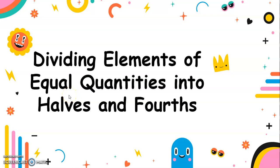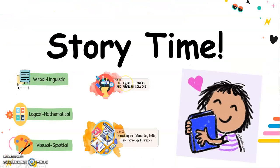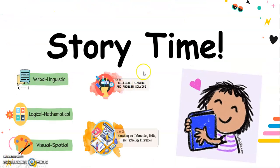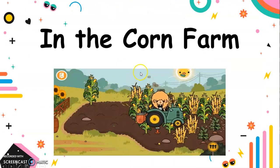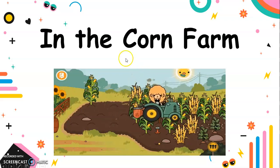Good day, Grade 1. Today we're going to talk about a lesson that will surely be very helpful for you. The title of our lesson is Dividing Elements of Equal Quantities into Halves and Fourths. And to start, we'll have our story time! The title of our story is 'In the Corn Farm.'